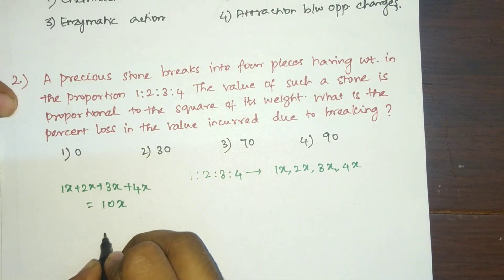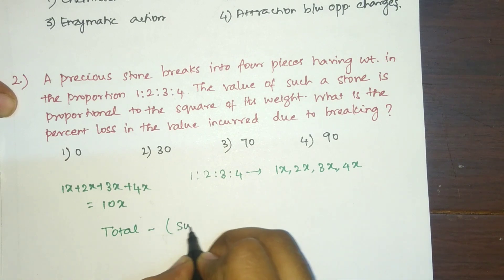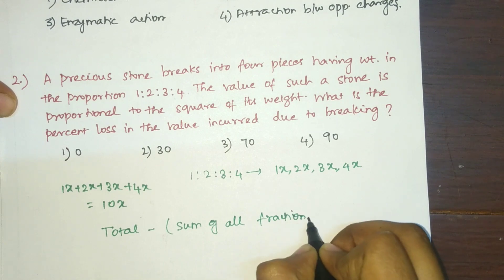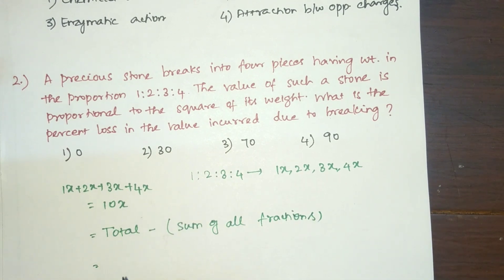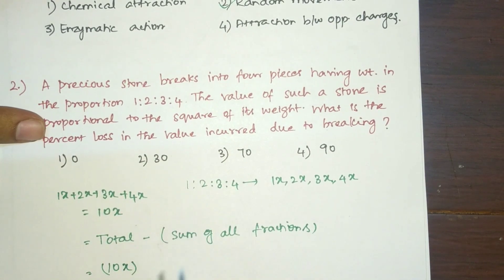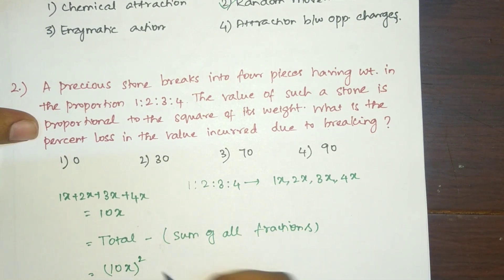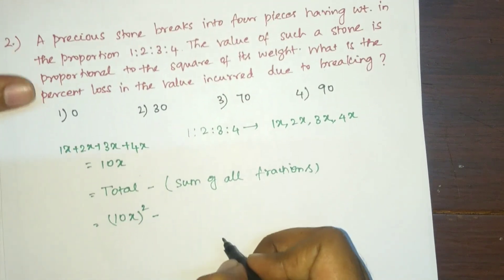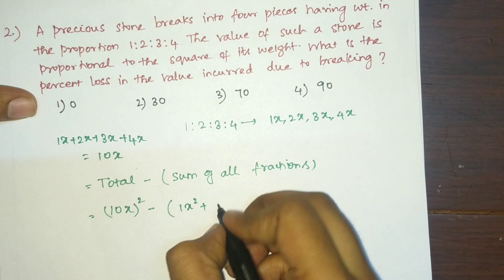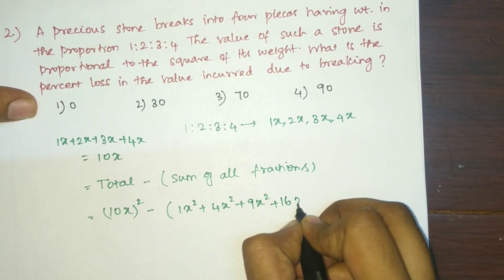To calculate the loss, we subtract the total value minus the sum of values of all the fractions. The total weight is 10x, so the total value is (10x)² = 100x². Since cost is proportional to the square of weight, the sum of values of the four pieces is: (1x)² + (2x)² + (3x)² + (4x)² = 1x² + 4x² + 9x² + 16x² = 30x².